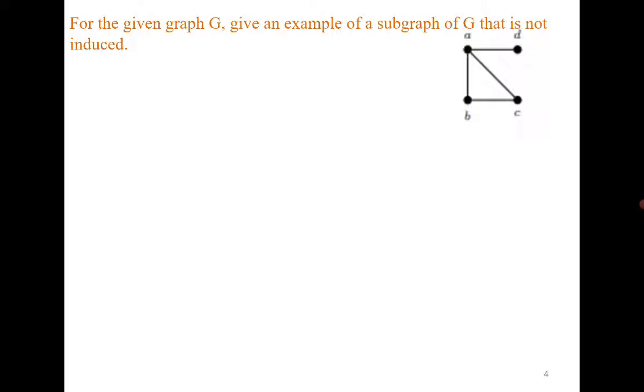Now for the given graph, give a subgraph which is not induced. This is very easy. For example, if you consider the subgraph A, B, C, you draw it like this. Then the induced subgraph must have all the edges which are incident to A, B, C. But you can see here that we haven't covered A, C. Therefore, this is a subgraph of G which is not induced.